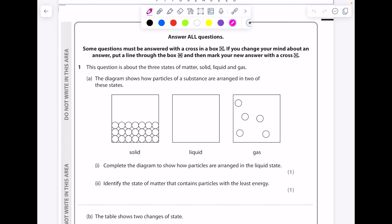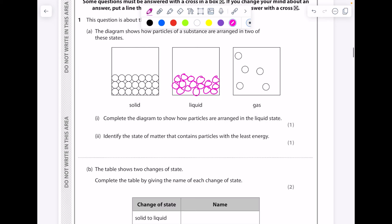The diagram shows how particles of a substance are arranged in two of these states. Complete the diagram to show how particles are arranged in the liquid state. So we need some gaps between the particles, but crucially remember those particles will sit at the bottom of the container. If you have a glass of water, the water molecules aren't just floating around.